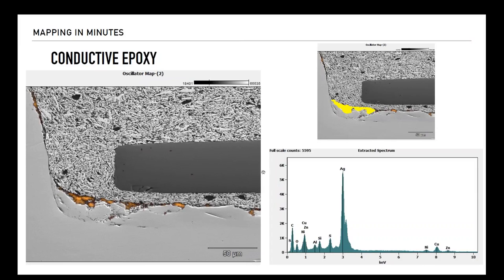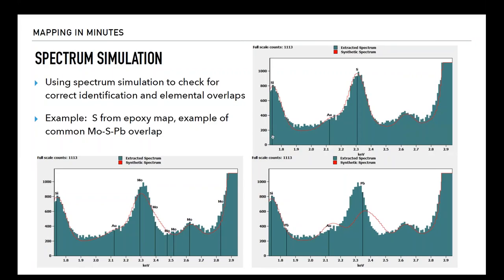This slide illustrates that point more clearly — the orange represents the sulfur. I did a freehand extraction and picked up some surrounding materials, but we got enough sulfur in the spectrum to verify its existence. This is just a reminder of what we did with the spectrum simulation — some of these are duplicates because when we send these slides out after the fact, you won't necessarily have access to the live recording, so the slides will help you remember what we showed.